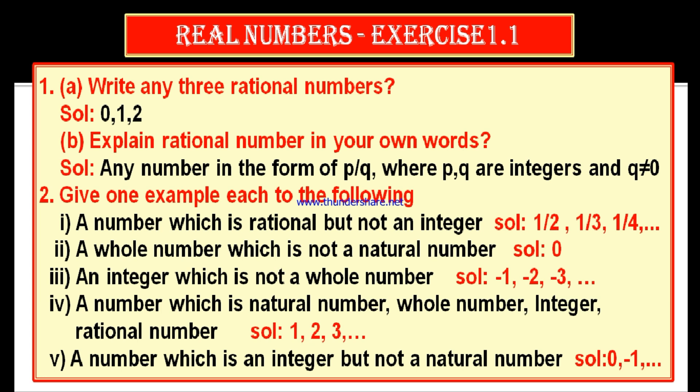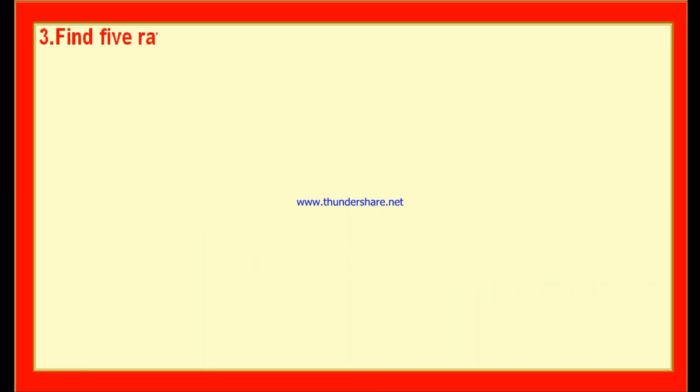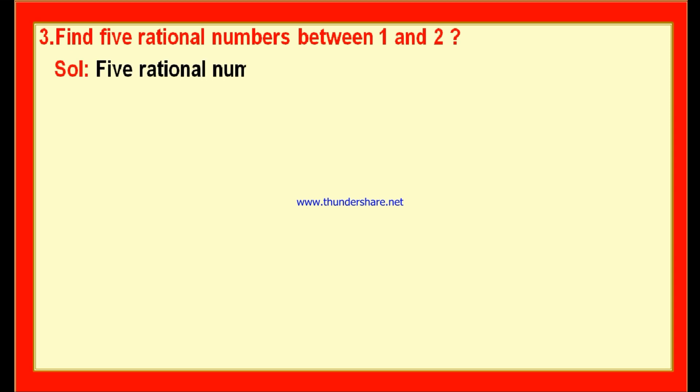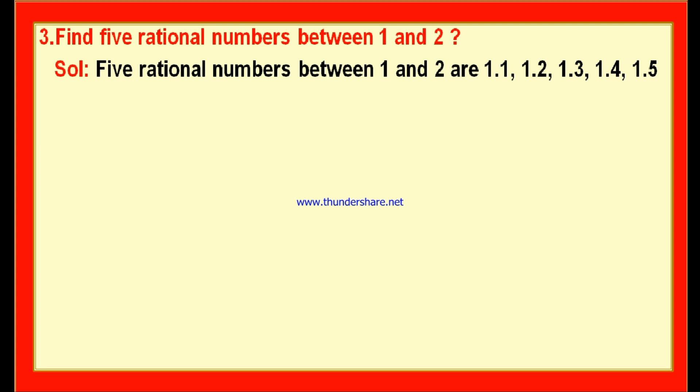Question number 3: find 5 rational numbers between 1 and 2. There is no natural number, whole number, or integer between 1 and 2, but there are rational numbers. In fact, there are infinite rational numbers between any two rational numbers. Five rational numbers between 1 and 2 are: 1.1, 1.2, 1.3, 1.4, and 1.5.